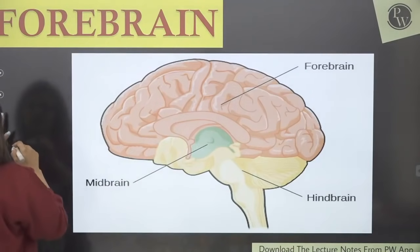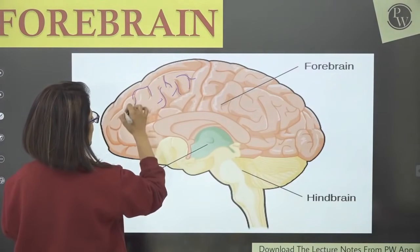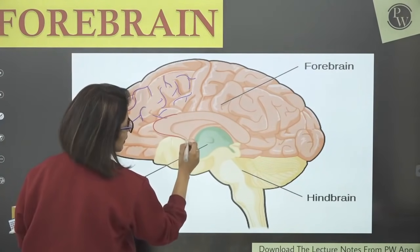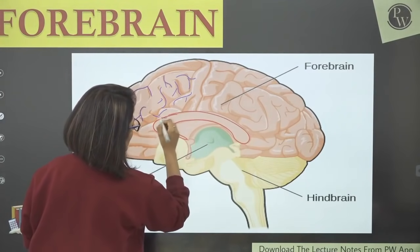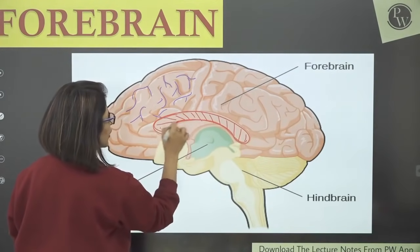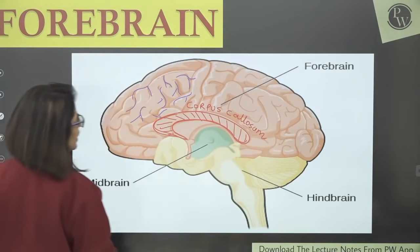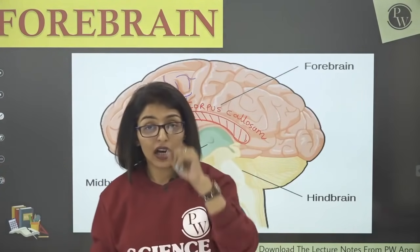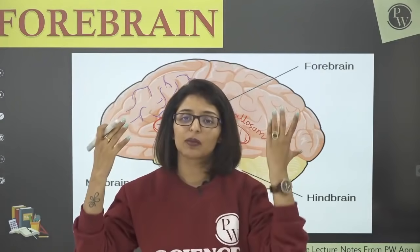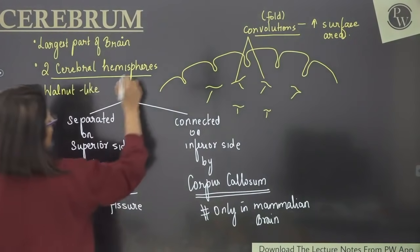Each cerebral hemisphere is divided into four lobes: frontal lobe (red), parietal lobe (blue), occipital lobe (at the back), and temporal lobe (on the sides). Each hemisphere has four lobes, so there are eight lobes total. Different lobes have different functions.